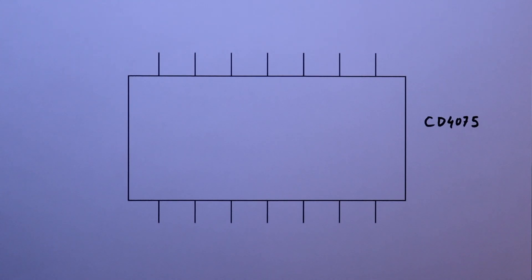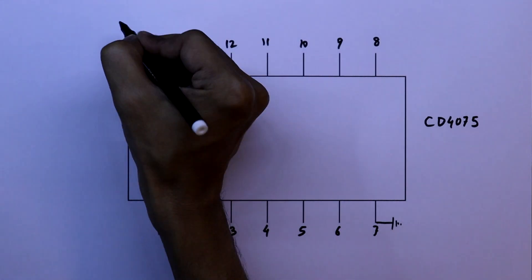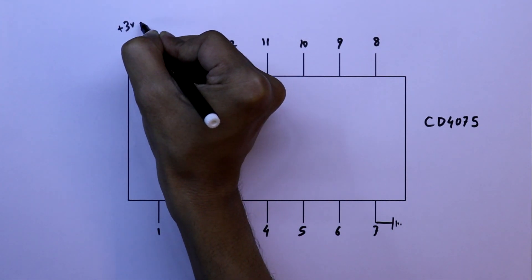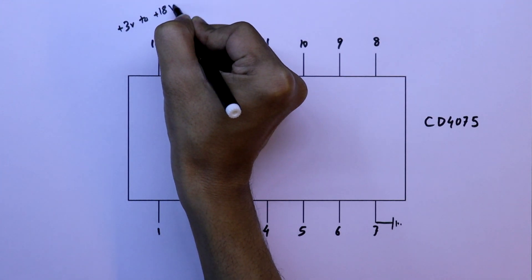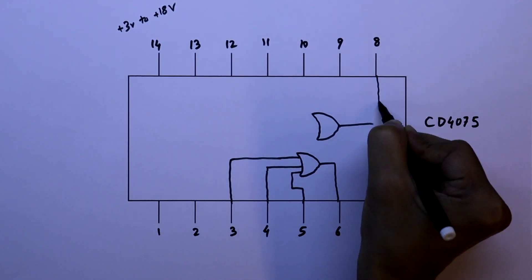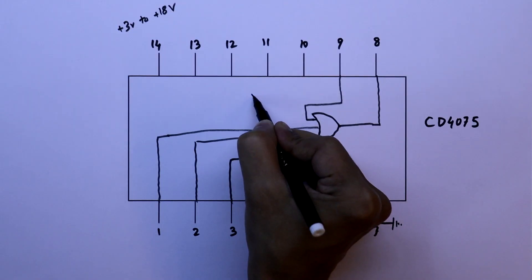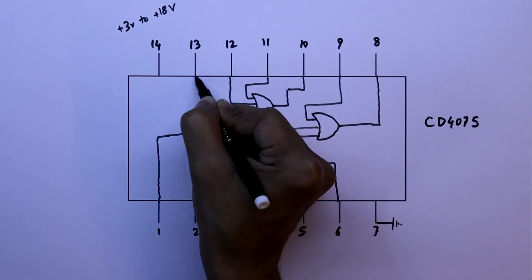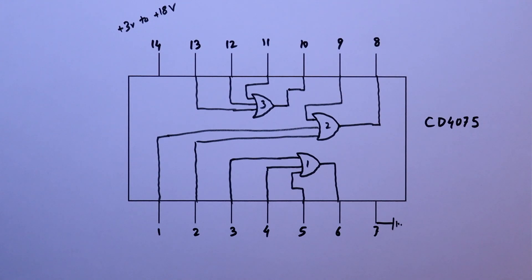CD4075 is a 3-input OR gate. Pin number 7 is ground and pin number 14 is positive. We can supply from 3V to 18V. It contains OR gate 1, OR gate 2, and OR gate 3. So this is the pin diagram of this IC.